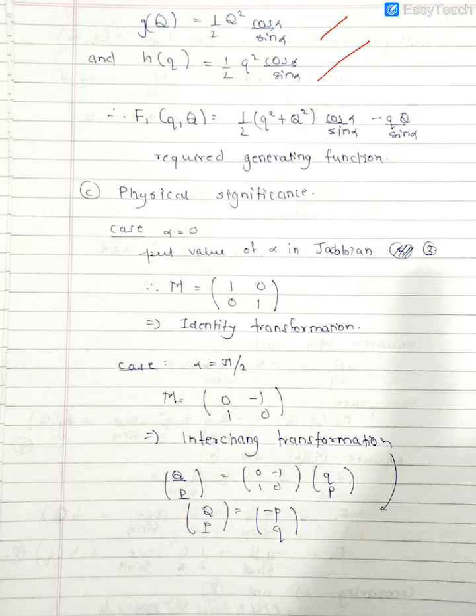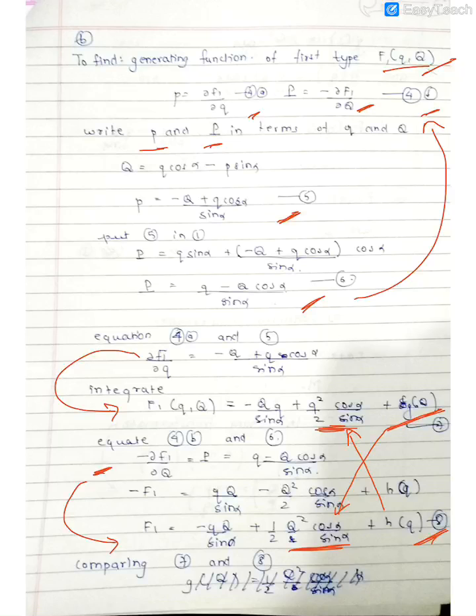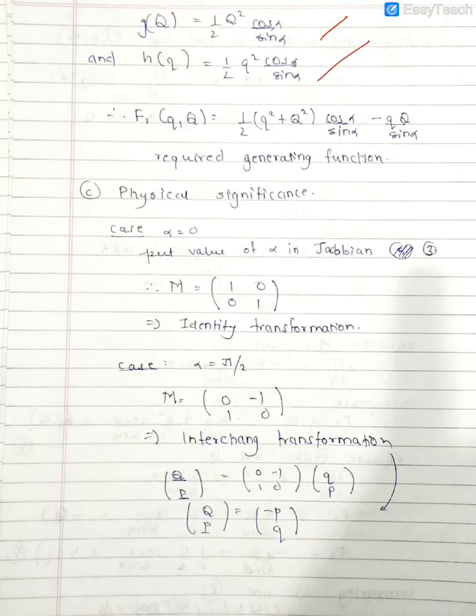Finally you can see the generating function becomes half into small q squared plus capital Q squared times cos alpha over sin alpha minus 2 into capital q capital Q. We have assumed that the generating function is of type F1 which is purely based on the generalized coordinates, not the momenta type. Our function is of generalized coordinates.